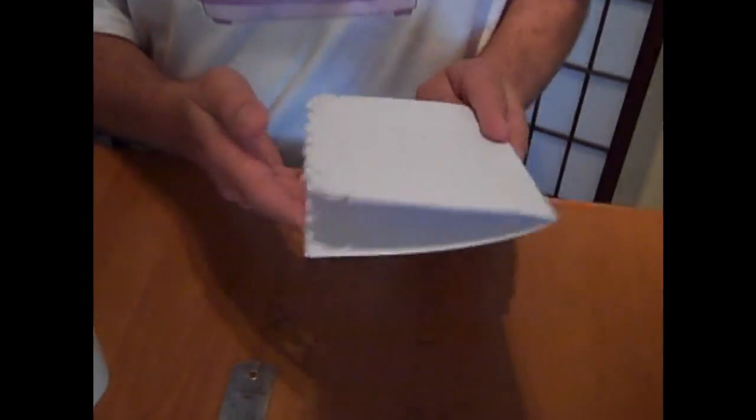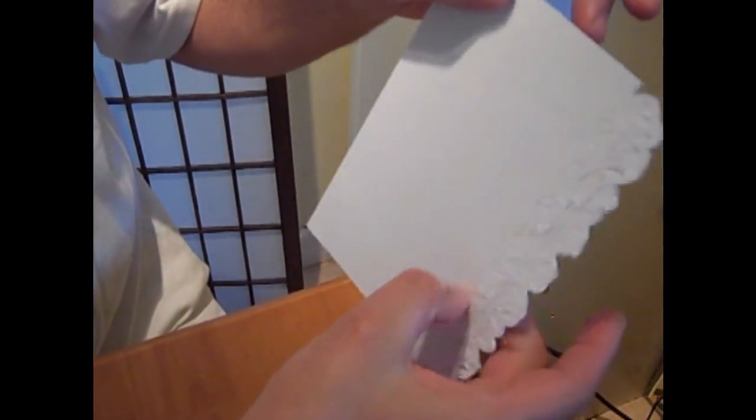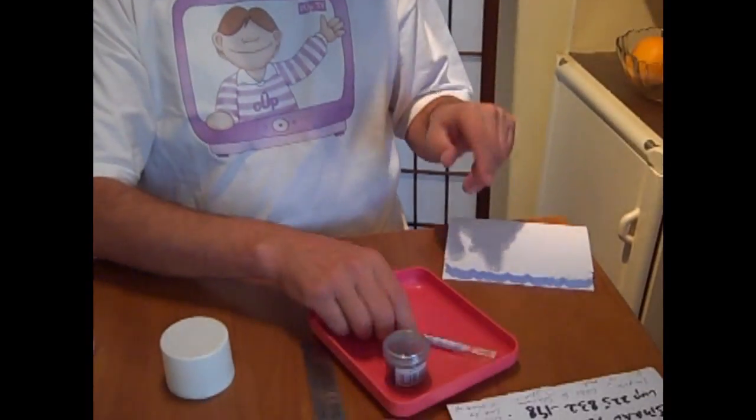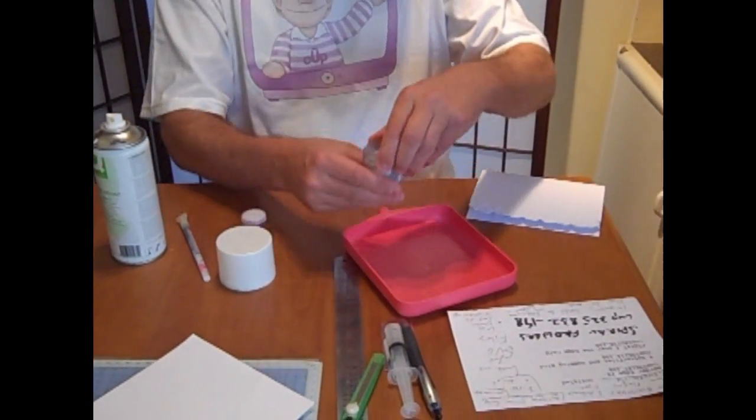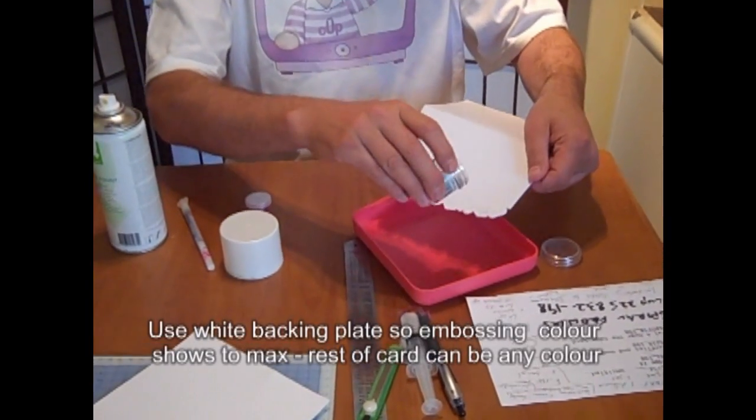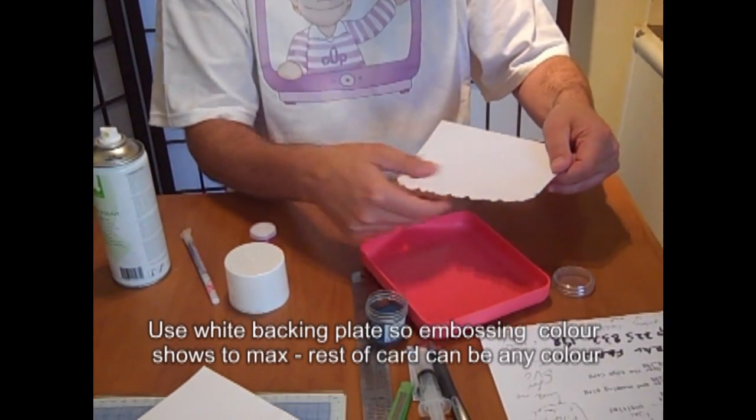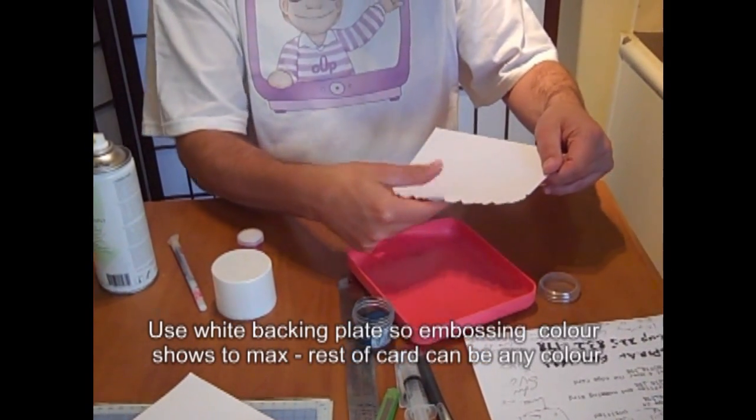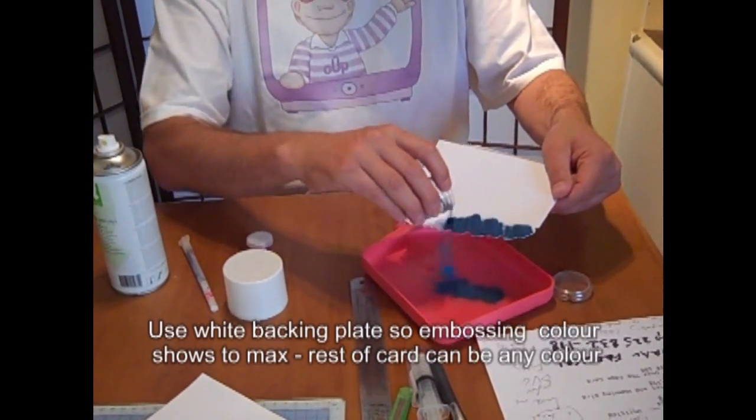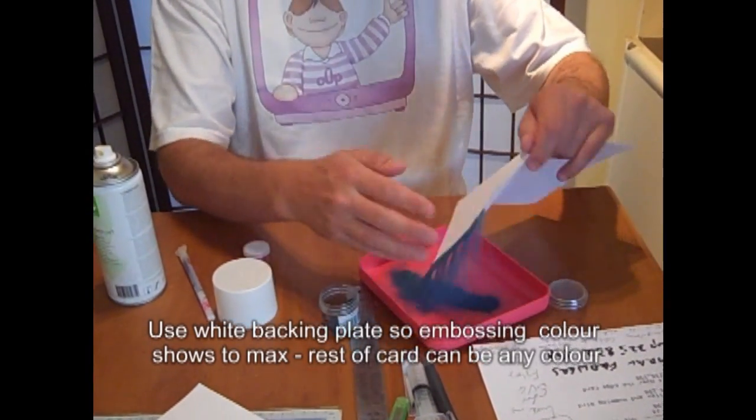So there you have the card with the glue showing through the apertures. Now take some embossing powder and cover the apertures where the glue is showing through, making sure it's stuck down onto the backing plate. Cover it liberally, then just tap off the excess.